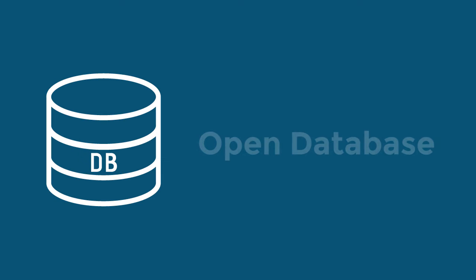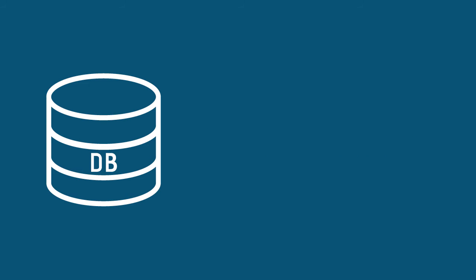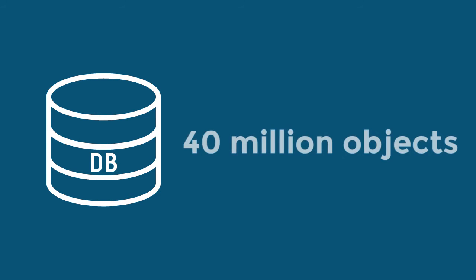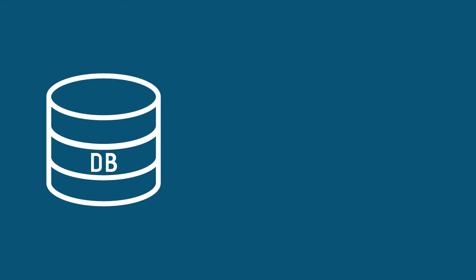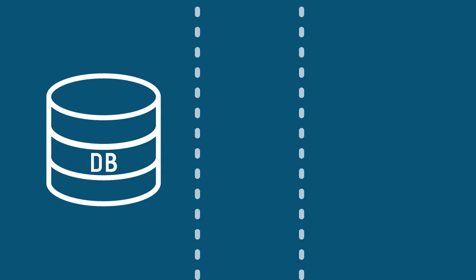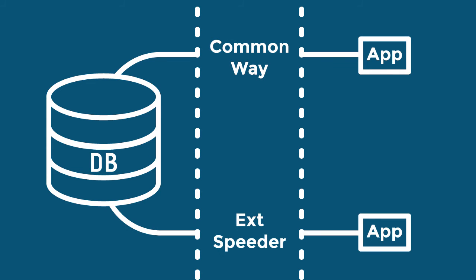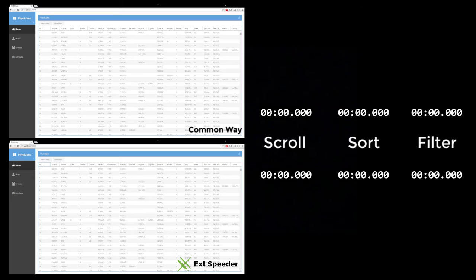We have picked an open database with doctors in the USA containing 40 million objects. We will scroll, sort, and filter in this dataset. Let's compare the common way versus the EXT Speeder way — on the top you will see the common way, and on the bottom the EXT Speeder way.